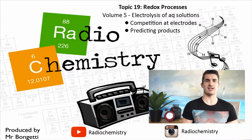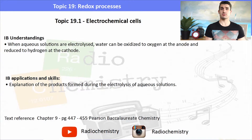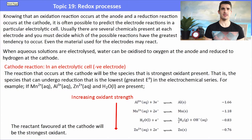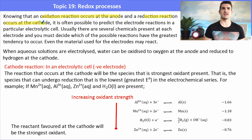We look at competition at electrodes and we need to be able to predict products of electrolysis. The IB understandings and applications basically focus around those two points. It's possible to predict the electrode reactions in an electrolytic cell when we know what species are around, and sometimes there are several different species present and we need to decide which one has the greatest tendency to occur.